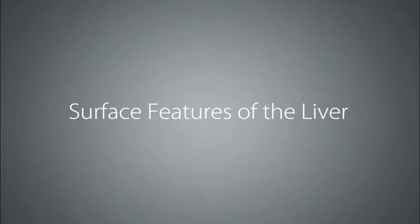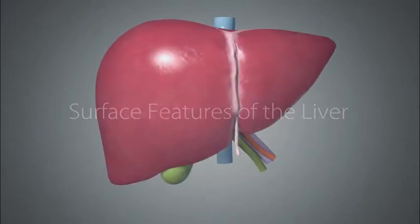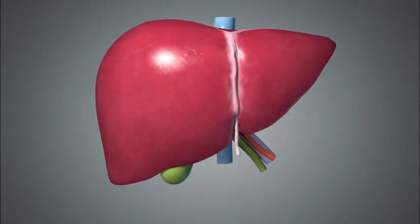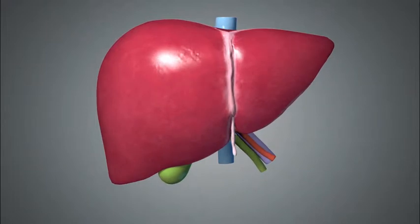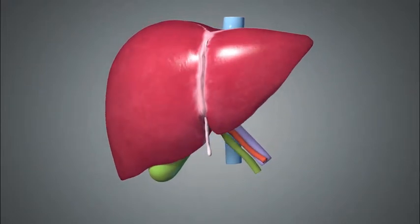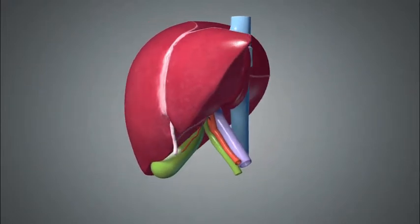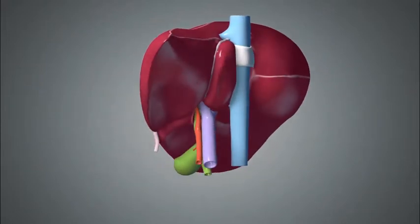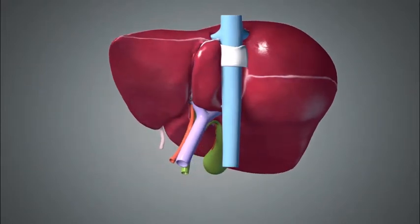Let's begin with the surface features of the liver. This is the anterior view of the liver, and this is the posterior view.